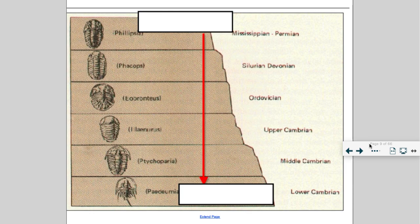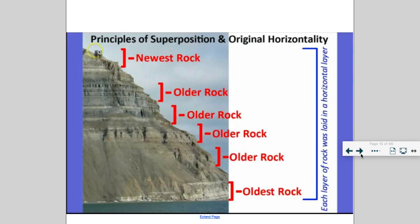Where would you find the young rocks in this diagram? At the top. The young ones are on the top, the old ones are at the bottom. If you take a look at this slide, you can see all the different layers of deposition. The newest rocks are at the very top, the oldest are at the very bottom.